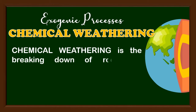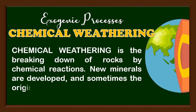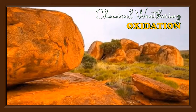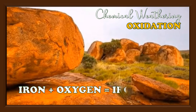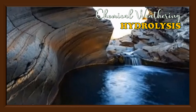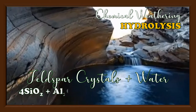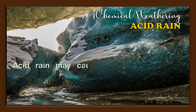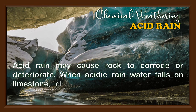Chemical weathering is the breaking down of rocks by chemical reactions. New minerals are developed, and sometimes the original properties of the minerals in rock or soil are replaced. There are three types of chemical weathering. First is oxidation — the reaction of a substance with oxygen. When iron in the rocks reacts with oxygen in air, it forms iron oxide, which weakens the rocks and gives them a rusty appearance. Rust may contribute to the disintegration or breakage of the rock. Second is hydrolysis — 'hydro' meaning water and 'lysis' referring to the process of breaking down. Hydrolysis is the chemical breakdown of rocks when combined with water to produce clay and soluble salts. When water comes in contact with granite, the feldspar crystals inside react chemically, forming clay minerals.